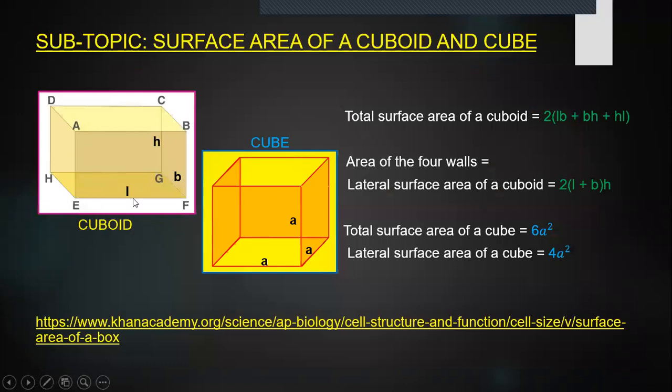Now, I'm going to start with my first subtopic in the chapter, which is surface area of a cuboid and cube. Here you can see both the solid figures. You can see a cuboid, and in the cuboid, you can see a length, a breadth and a height.